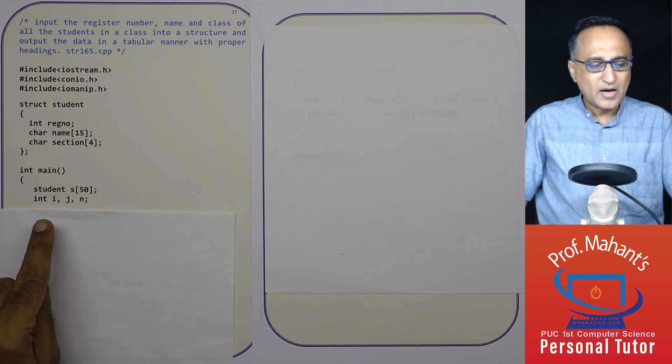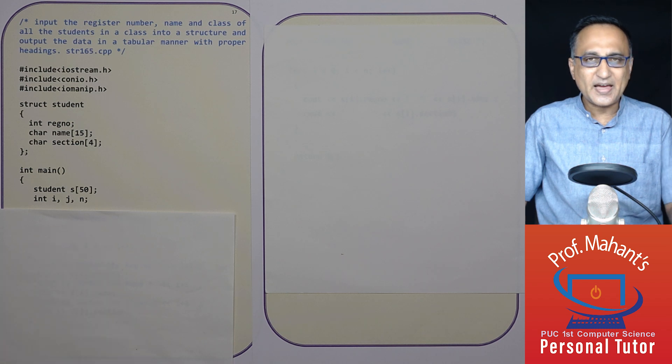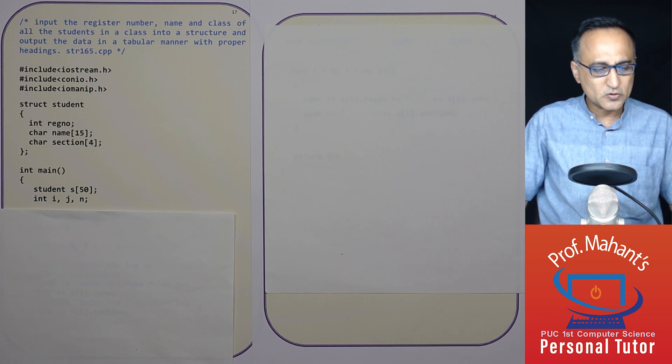Now, i, j and n, i is required because you're using an array so that you can get into the particular student reference s of zero, s of one, s of two and so on.